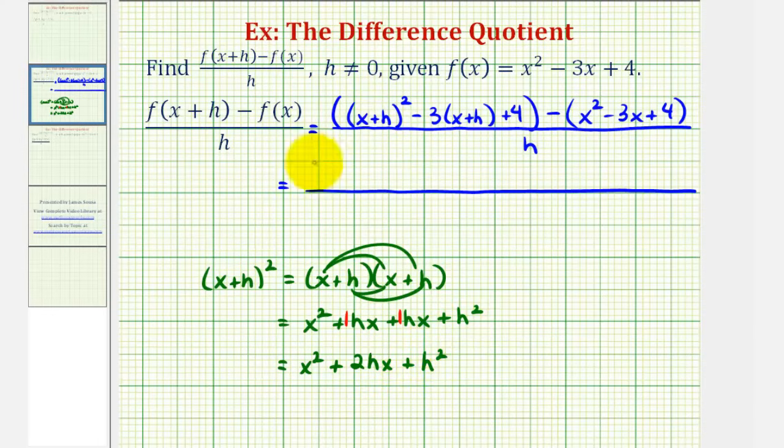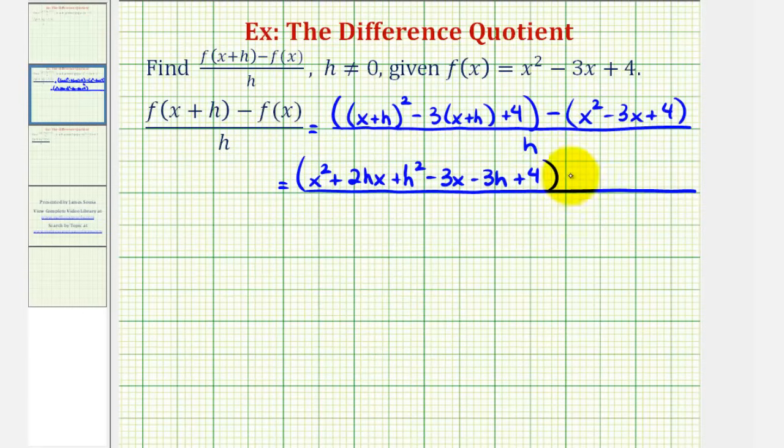Which means f of the quantity x plus h would be x squared plus two hx plus h squared. And now we'll distribute negative three, so we have minus three x minus three h, plus four. And we still have minus f of x, so minus the quantity x squared minus three x plus four. This is still divided by h.